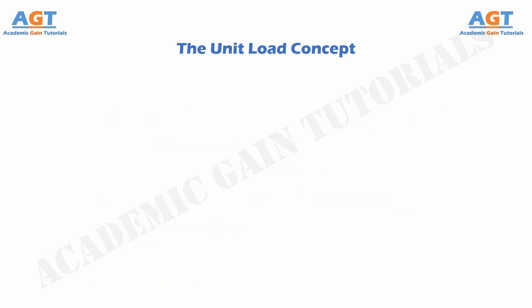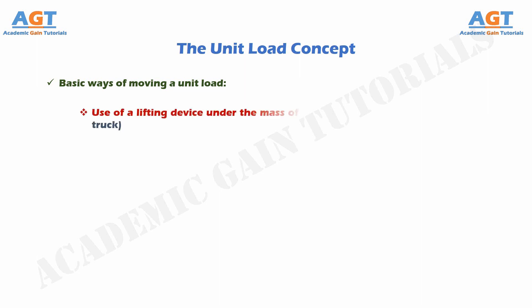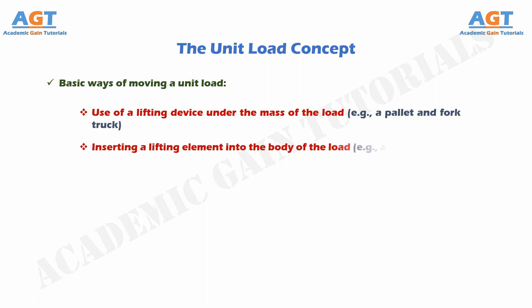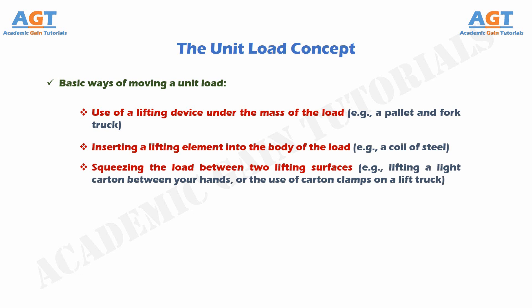So, these are the basic ways of restraining a unit load. Basic ways of moving a unit load: through use of a lifting device under the mass of the load — for example, a pallet and fork truck; by inserting a lifting element into the body of the load — for example, a coil of steel; by squeezing the load between two lifting surfaces — for example, lifting a light carton between your hands, or the use of carton clamps on a lift truck.